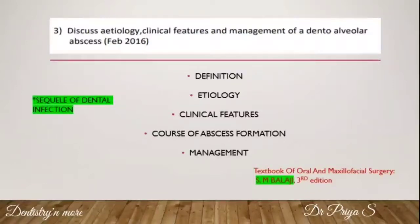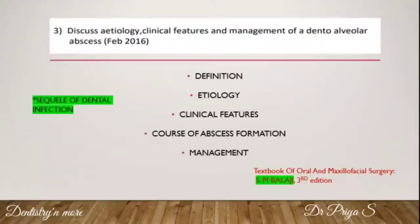For a question on dentoalveolar abscess, first define an abscess, then mention a flowchart on the sequelae of dental infection as given in the textbook of oral pathology by Shafer's. List out all the etiological factors of dentoalveolar abscess, which are the same as for odontogenic infection. Mention the clinical features and also add a note on the course of abscess formation — there are different stages which you need to list out.